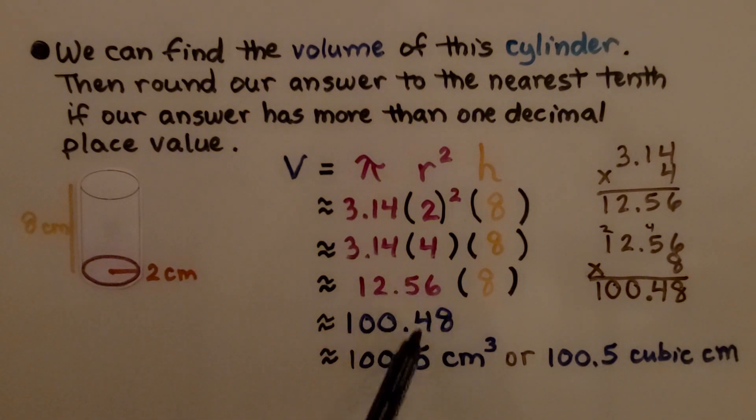We round this to the nearest tenth. The 8 tells the 4 to go up to a 5 and then it drops off. We have 105 tenths cubic centimeters or centimeters cubed.